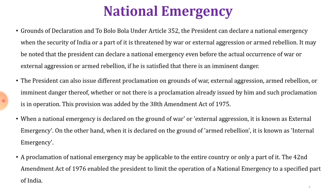Such a proclamation can be issued whether or not a proclamation is already in operation. This provision was added by the 38th Amendment Act of 1975. When the national emergency is declared on the ground of war or external aggression it is known as an external emergency. On the other hand, when it is declared on the ground of armed rebellion it is known as an internal emergency.